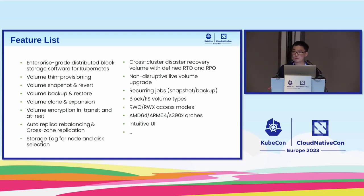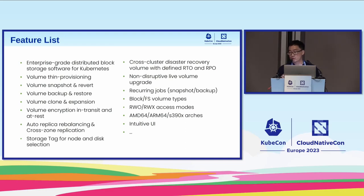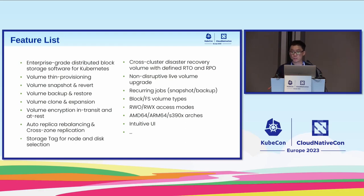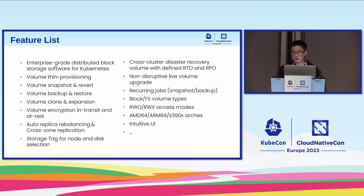For replicas, we have different replica placement strategies. Cross-zone placement is built-in, so replicas are spread across each zone to protect against data loss. We also have replica rebalancing — some users on public cloud have strategies to scale nodes up or down, and they want better replica balance when nodes come back. We support that. Longhorn also supports disruptive live volume upgrade and many other capabilities.